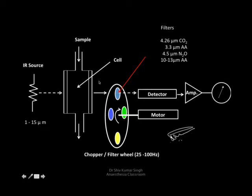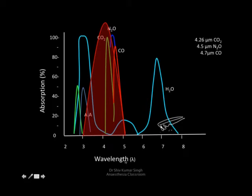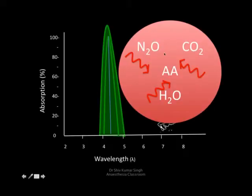The amount of absorption of infrared light is proportional to the substances present in the sample. However, in the range of 3 to 5 micrometers, the absorption spectra of carbon dioxide, nitrous oxide, and carbon monoxide are very close. This leads to something called collision broadening — nitrous oxide, carbon dioxide, anesthetic agent, and water all absorb similarly and can affect the absorption of each other.